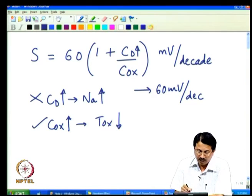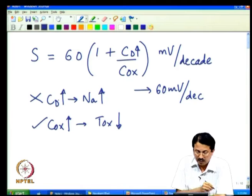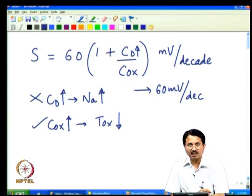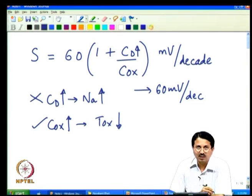Increasing Cox is helpful, but can we make Cd equal to zero? Obviously not with conventional bulk silicon technology, because in bulk silicon there is always a certain depletion width governed by doping concentration, and that determines your depletion capacitance.